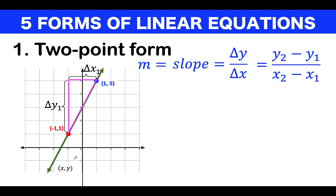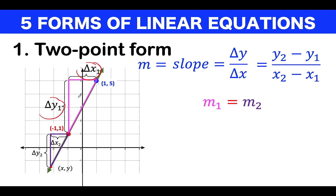If you have another point (x, y) on the line, there is another rise and run. We denote them delta y sub 2 and delta y sub 1 for the rises, and delta x sub 2 and delta x sub 1 for the runs. One property of a line is that its slope is uniform. If you have two slopes m sub 1 and m sub 2, represented by a pink triangle and a purple triangle respectively, then these two slopes are equal.